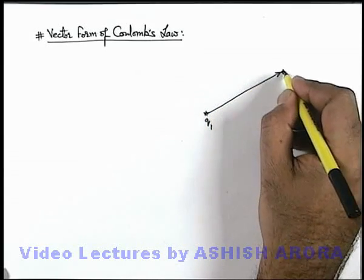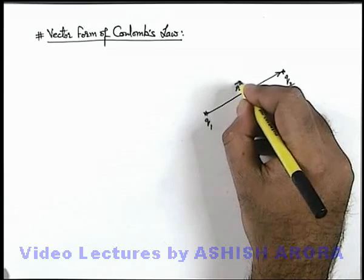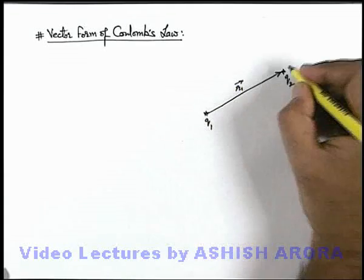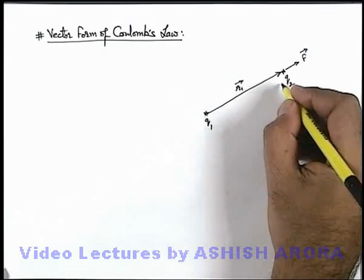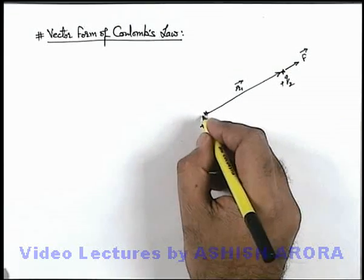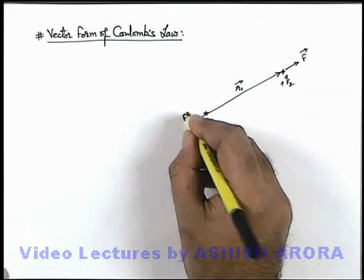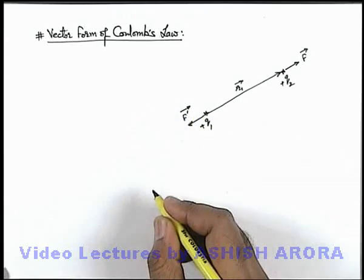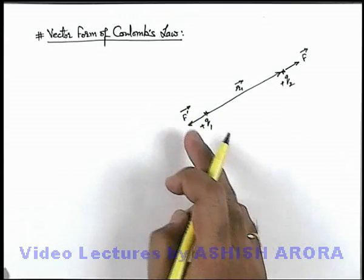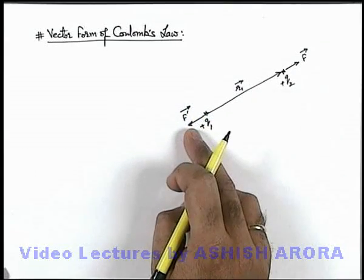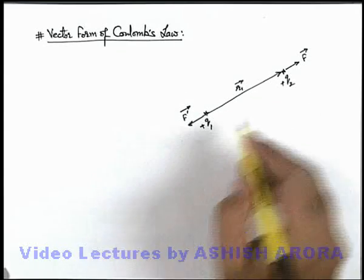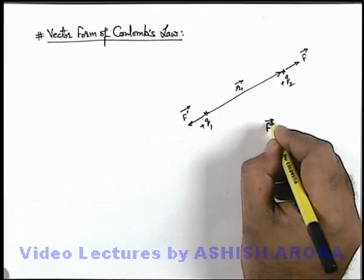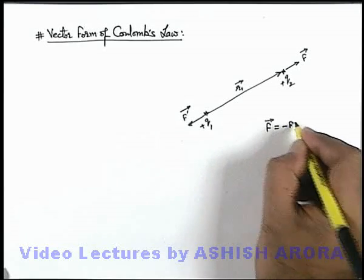The position vector of charge q2 with respect to q1 is r1 vector, and the force experienced by the charge q2 is F vector, and that experienced by this q1 is F dash vector. In this situation we know that these two are equal and opposite forces, as action reaction forces are there. So we can always write that F vector is equal to negative of F dash vector.